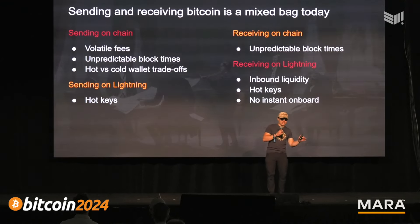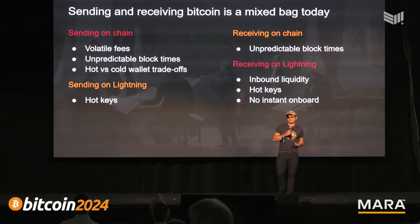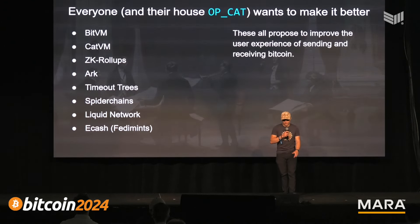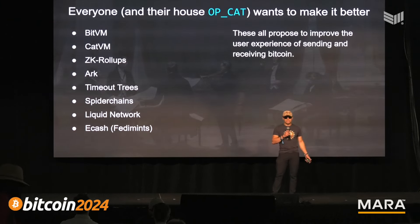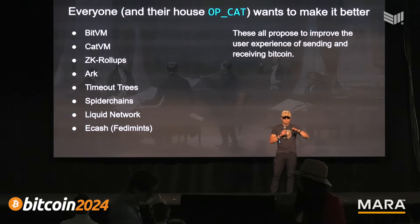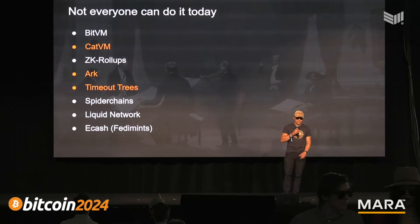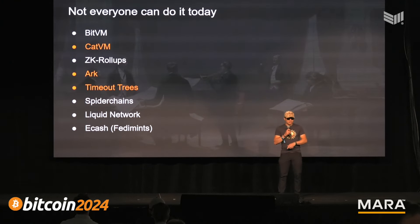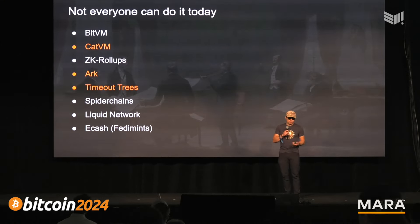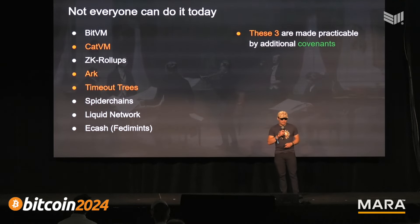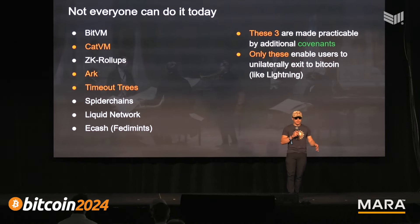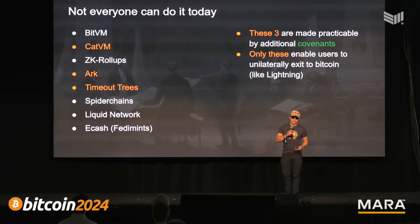We have this annoying split in the user experience of Bitcoin between sending and receiving on-chain versus lightning, and I think we can make that better. Here is just a small list of the many proposals out there trying to make the experience of using your Bitcoin — sending, receiving, holding — more predictable, simpler, and better for everyone. The ones in white can be done with Bitcoin as it is today, but the ones in orange don't work today — they need more covenants.